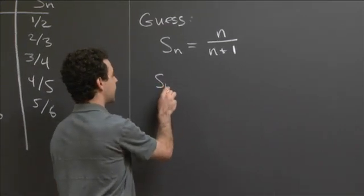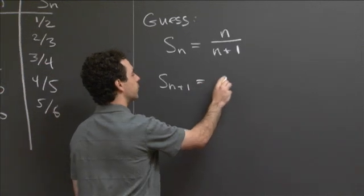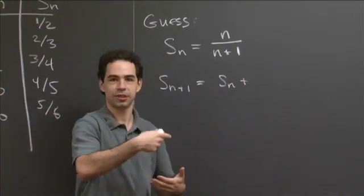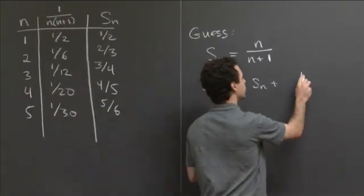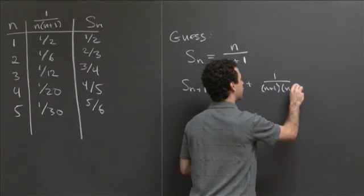So in our case, Sn plus 1 is equal to Sn plus the next term, the n plus first term, which in our case is 1 over n plus 1 times n plus 2.